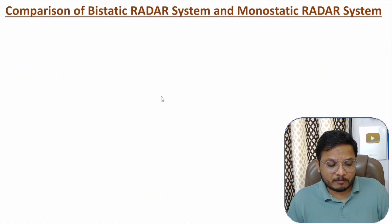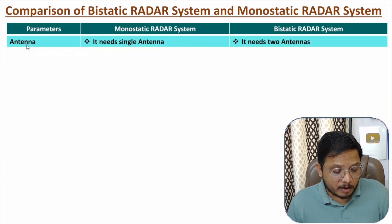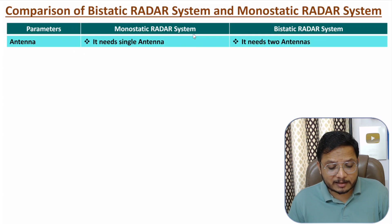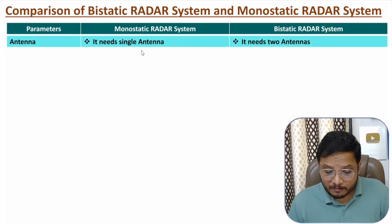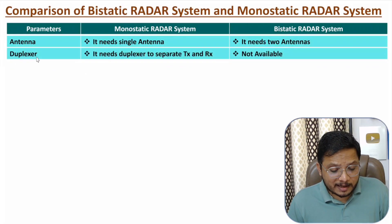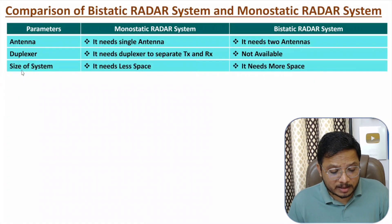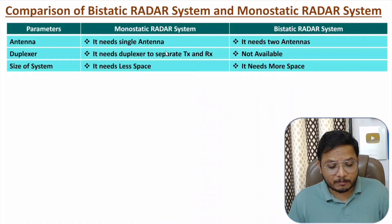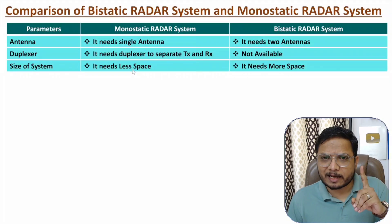Now let us compare monostatic and bistatic radar systems based on different parameters. In terms of how many antennas are used: with the monostatic radar system we just need a single antenna, because the duplexer isolates the transmitter and receiver circuits. With the bistatic radar system we need two antennas. Regarding the duplexer: it is required in monostatic but not present in bistatic. In terms of size, the monostatic system needs less space because only one antenna is used.